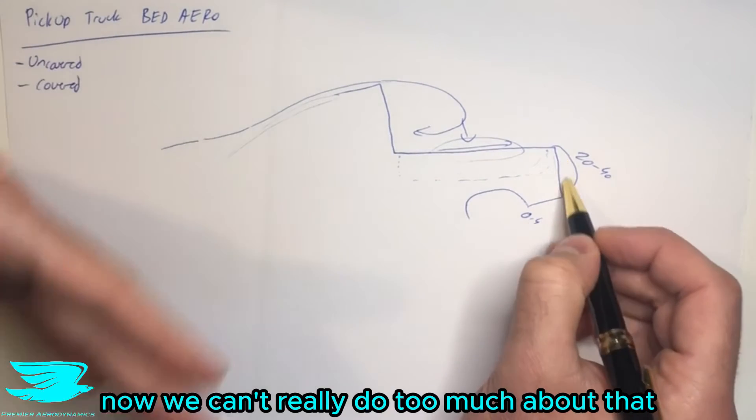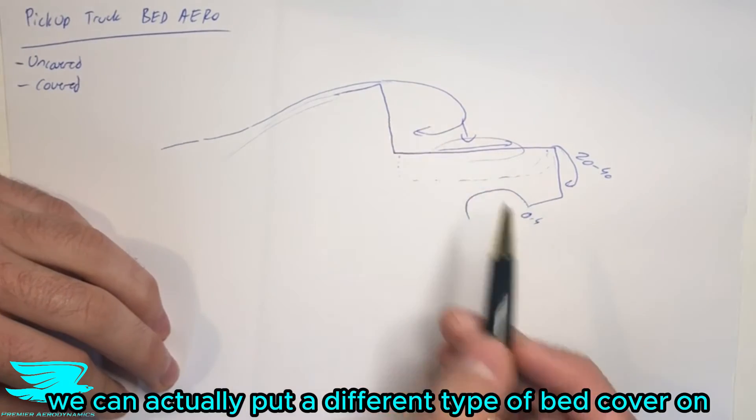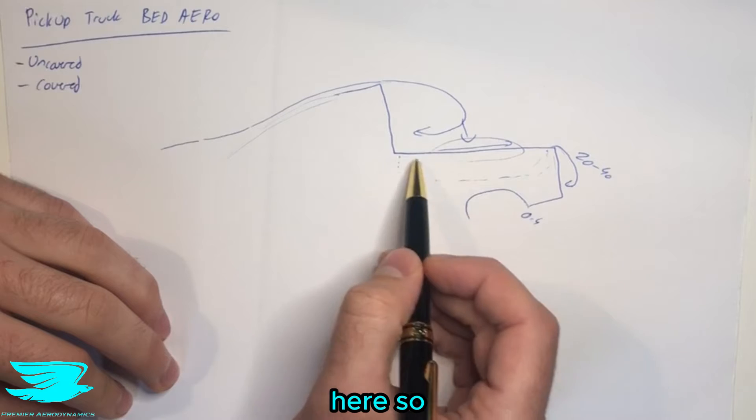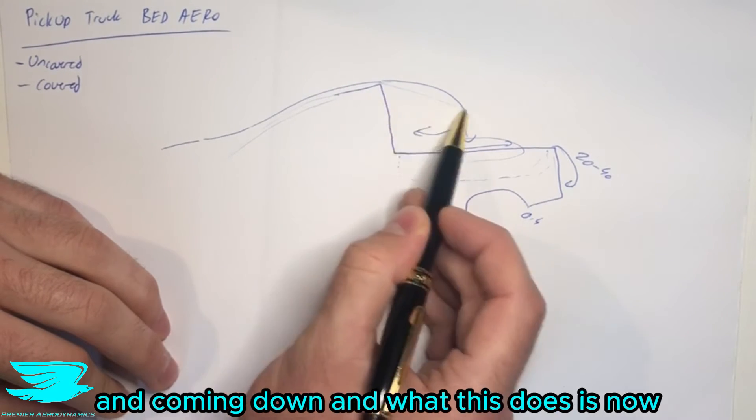Now, we can't really do too much about that because this is a practical consideration down here. But for this rear window, we can actually put a different type of bed cover on here. So instead of just completely covering the bed flat here, we can actually get the bed cover starting from here and coming down.